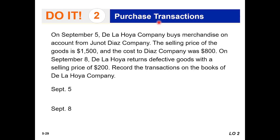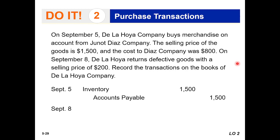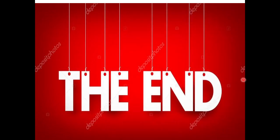Do-it exercise: On September 5, Delaware Company buys merchandise on account from DS Company. The selling price is $1,500 and DS Company's cost was $800. On September 8, Delaware Company returns defective goods with a selling price of $200. Record the transactions on Delaware Company's books. September 5: Inventory debit, Accounts Payable credit for $1,500. September 8: Accounts Payable debit, Inventory credit for $200. Thanks to everyone for participating in my lecture.